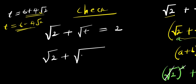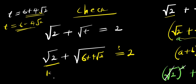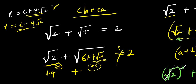I record the equation: root 2 plus root t equals 2. Let's start with t equals 6 plus 4 root 2. Square root of 2 is about 1.4, which is greater than 1. And 4 root 2 gives about 5-point-something, so 6 plus 4 root 2 is greater than 3. A number greater than 1 plus a number greater than 3 is obviously not 2, so this value is not correct.